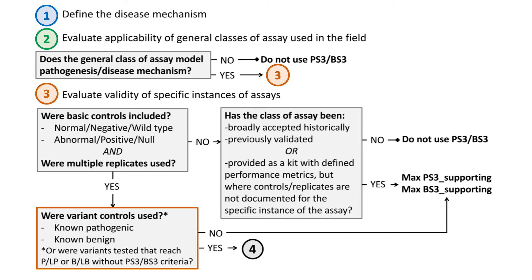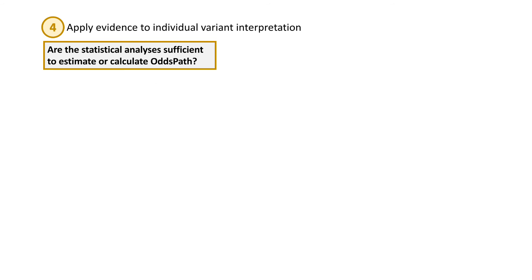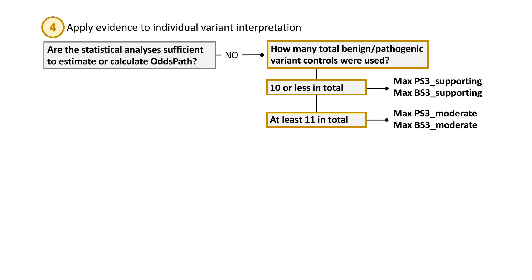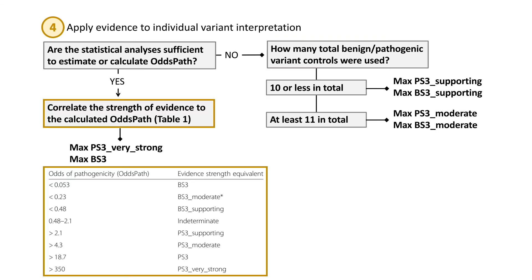Assay instances that do not include variant controls should be capped at PS3 supporting or BS3 supporting. For those assays that do include variant controls, the number used and the ability to estimate a statistical measurement of the odds of pathogenicity can inform the maximum strength of evidence. The recommendation suggests assays with 10 or fewer validation controls should be capped at PS3 supporting or BS3 supporting, while those with at least 11 total validation controls but no formal statistical analysis can be used at a maximum level of moderate. When rigorous statistical analysis has been included and allows a formal odds of pathogenicity to be calculated, PS3 could potentially be used at any strength level, including being upgraded to very strong, while BS3 could potentially be used at the strong level.